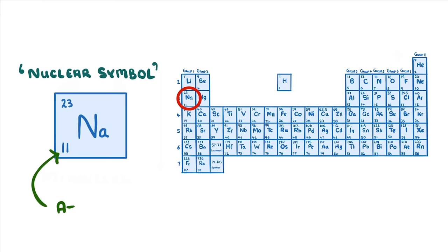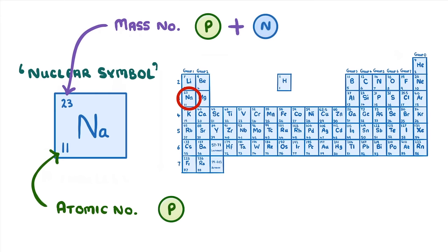In the bottom left we have the atomic number, which tells us how many protons the atoms of that element have. And in the top left we have the mass number, which tells us the total number of protons and neutrons in that atom.